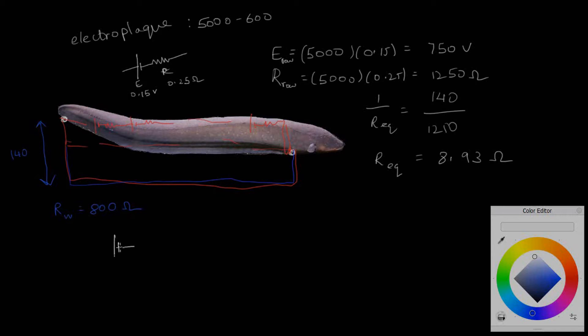So R_equivalent would work out to be 8.93 ohms. We have the effective EMF, effective internal resistance, and the external resistance offered by water. Now that we've simplified this, let's apply Kirchhoff's laws.